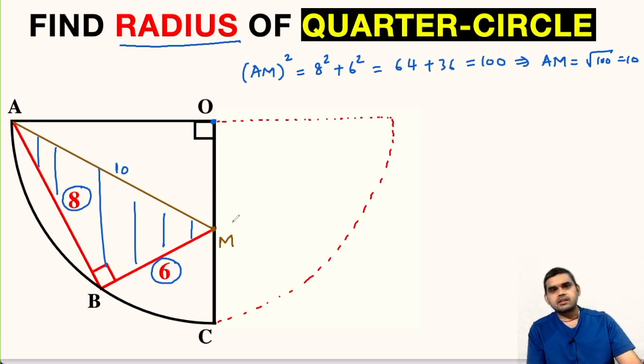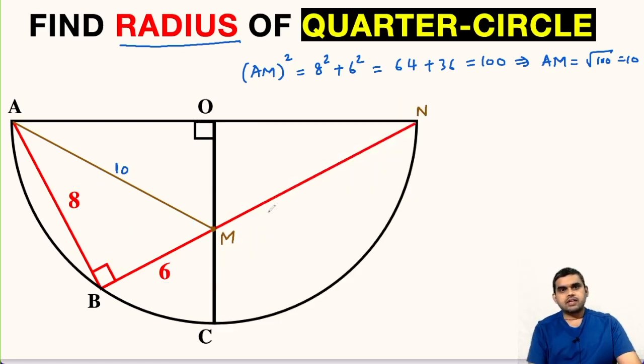This will form a semicircle. Now if we produce this BM, we know that it is going to pass through the extreme end of the diameter. So let us name this as point N. So now we have a much nicer looking diagram. We have completed this quarter circle into a semicircle.